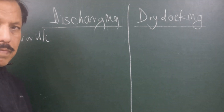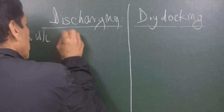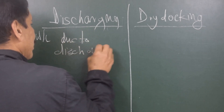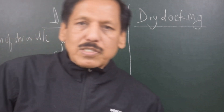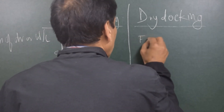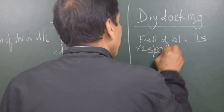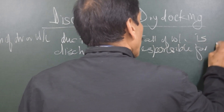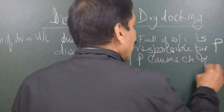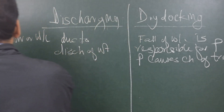When discharging weight, the change of draft or water level is caused due to the discharge of weight — because we discharge the weight there is a change of water level and draft. In dry docking, the fall of water level is responsible for the growth of upthrust P, and this upthrust causes the change of trim.